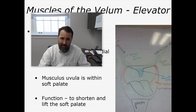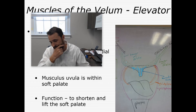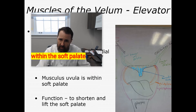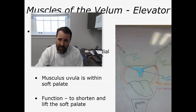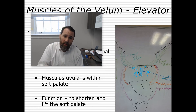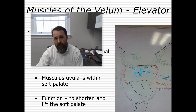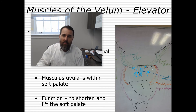The last muscle of the velum is the musculus uvula, illustrated here in the blue striations on this image. The musculus uvula is the intrinsic muscle of the uvula — it doesn't start somewhere else and reach into the uvula; it is within the uvula. When this muscle shortens, it pulls up on the uvula, that little piece of tissue that dangles in the back of your throat. The musculus uvula shortens the soft palate and raises the uvula.